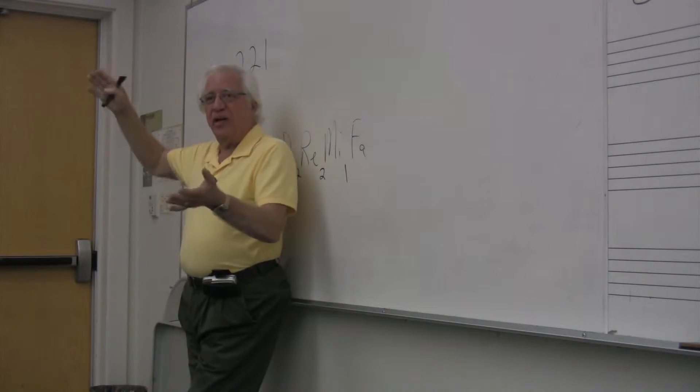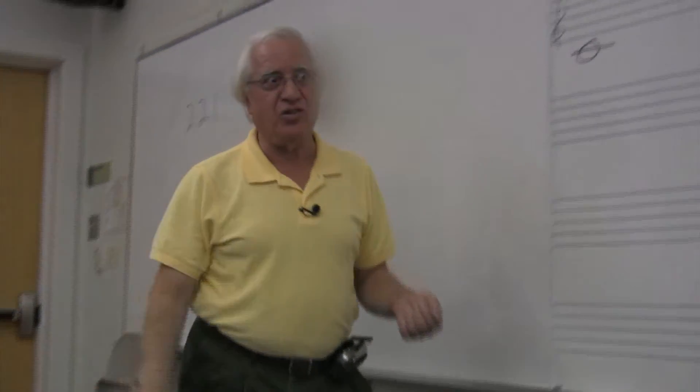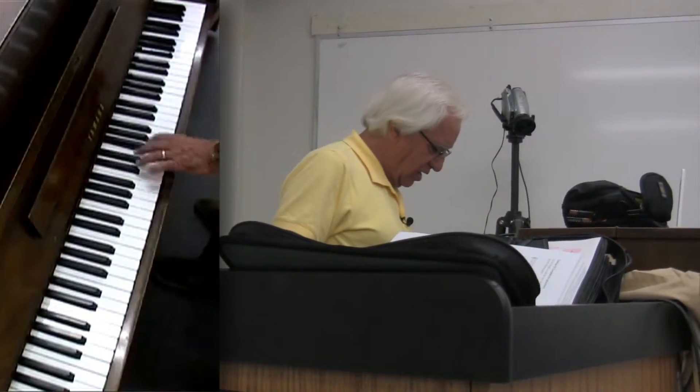If we're making a C major scale, for instance, then we have, we begin it on C, D, E, F, G, A, B, and we end it on C. But all those other seven notes, they all have a different letter name. They're diatonic.